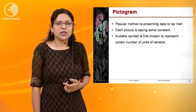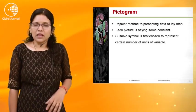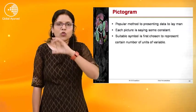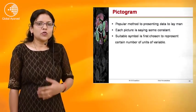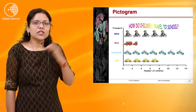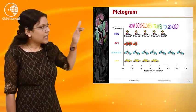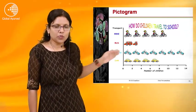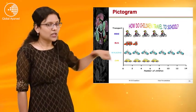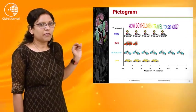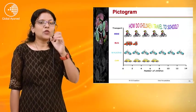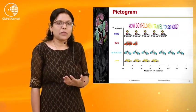Next we will see the pictogram. This is a popular method to represent data to a layman. Each picture represents a constant value. First we decide what one picture represents. A suitable symbol is chosen to represent a certain number of units of the variable. For example: how do children travel to school? — showing modes like bike, bus, and walking. A common man can easily understand this attractive picture-based diagram.